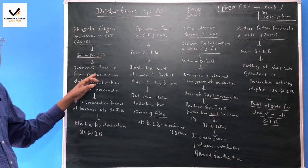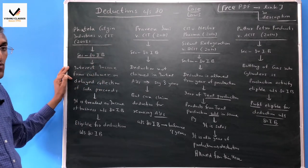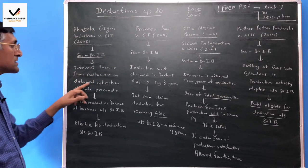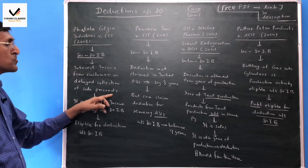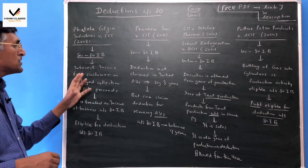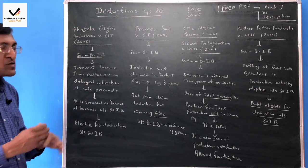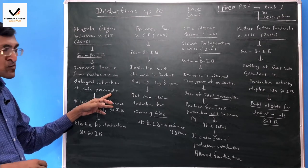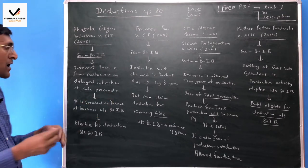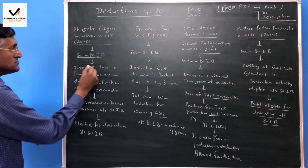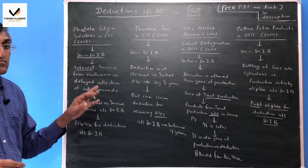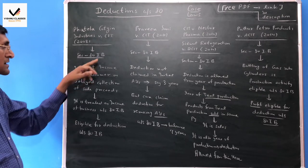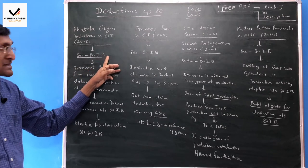In this case, a businessman or assessee earns income from customers on delayed collection of sales proceeds. In a normal business, we give some credit period to customers, and if the customer delays payment, we charge interest. The question is, is this interest also business income eligible for deduction under section 80IB?